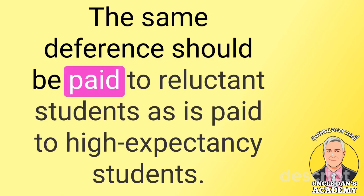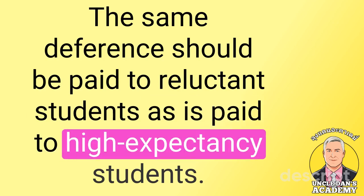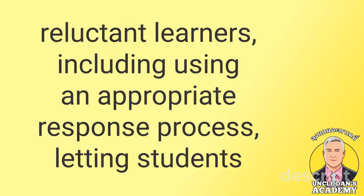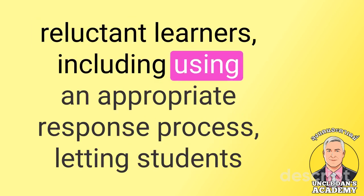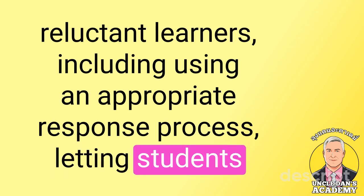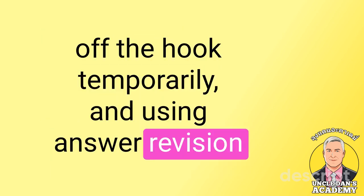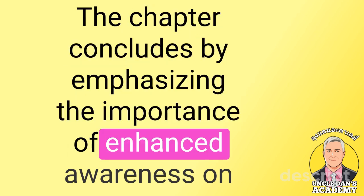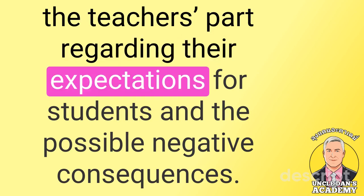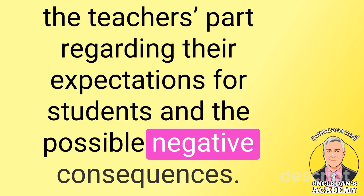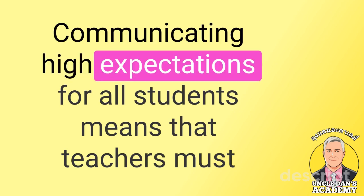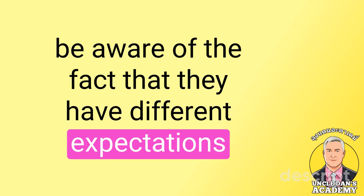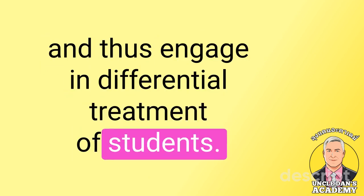The chapter also emphasizes the importance of interacting with reluctant learners in a rigorous manner when they respond incorrectly to a question. The same deference should be paid to reluctant students as is paid to high-expectancy students. The chapter provides several strategies for probing incorrect answers with reluctant learners, including using an appropriate response process, letting students off the hook temporarily, and using answer revision.